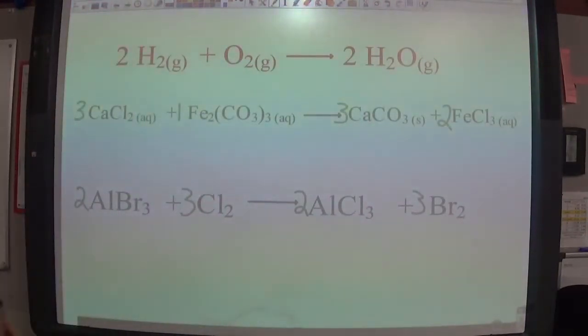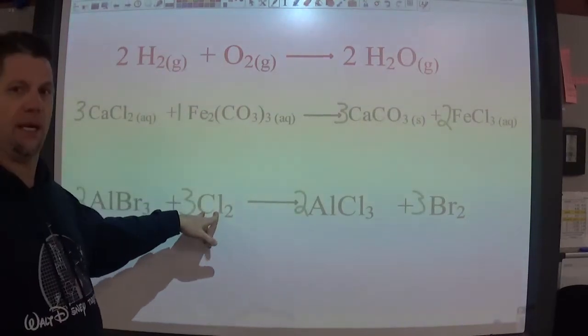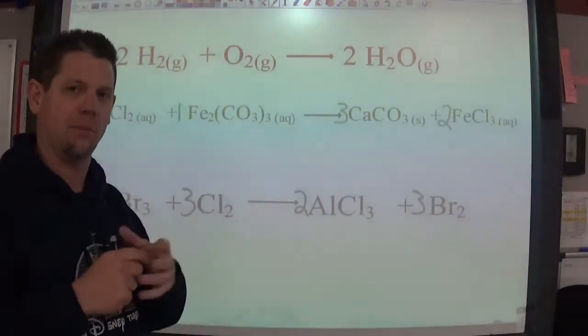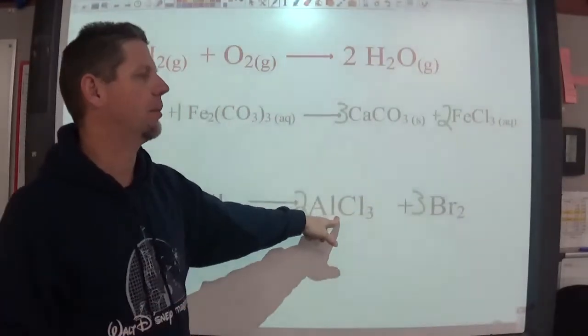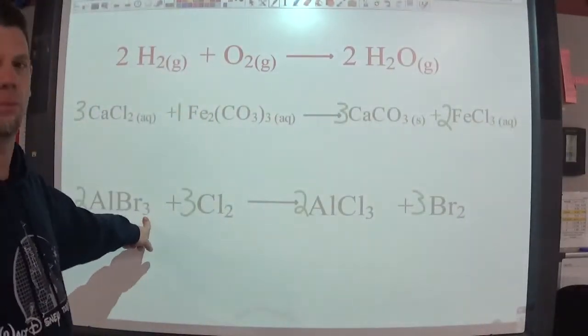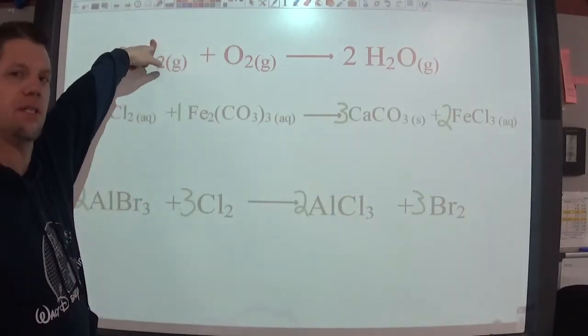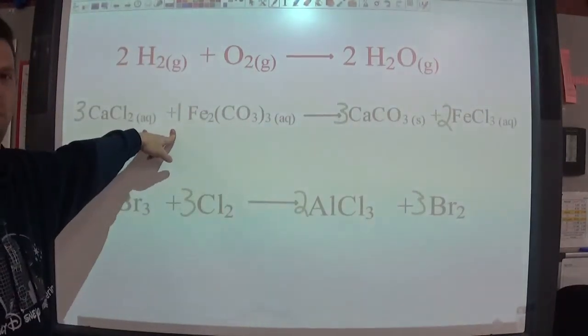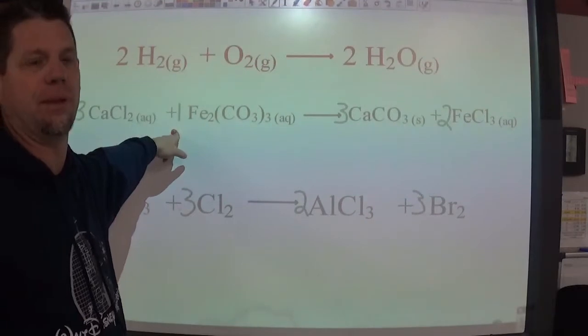So the ratio of these is two aluminum bromides reacts with three chlorines. They mix up, kind of scramble around, and they spit back out aluminum chloride and bromine as an element. This would be a single replacement reaction. This is a synthesis reaction. This is a double replacement reaction if it were to actually happen. But that's not a big deal.